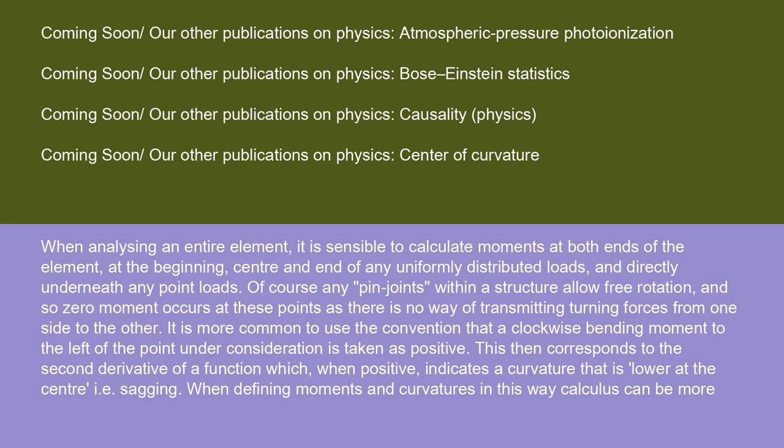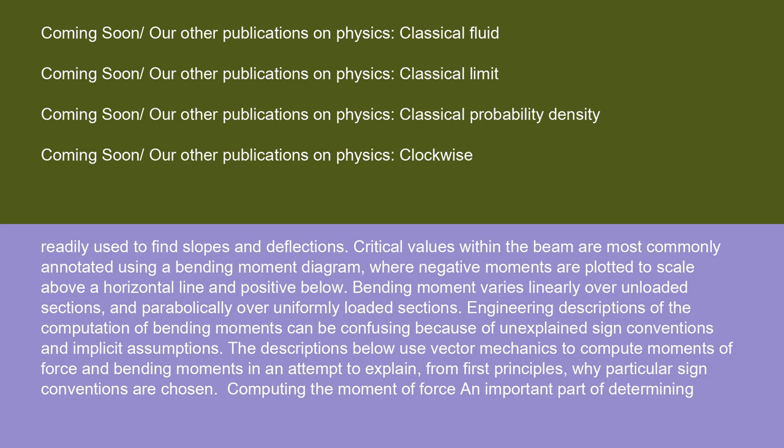It is more common to use the convention that a clockwise bending moment to the left of the point under consideration is taken as positive. This then corresponds to the second derivative of a function, which, when positive, indicates a curvature that is lower at the center, i.e. sagging. When defining moments and curvatures in this way, calculus can be more readily used to find slopes and deflections.